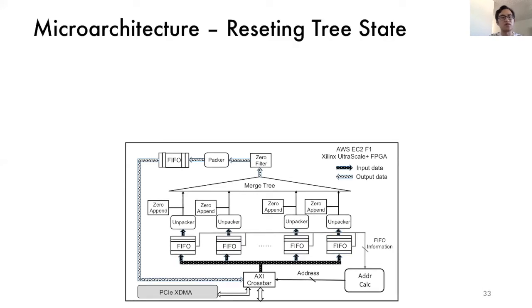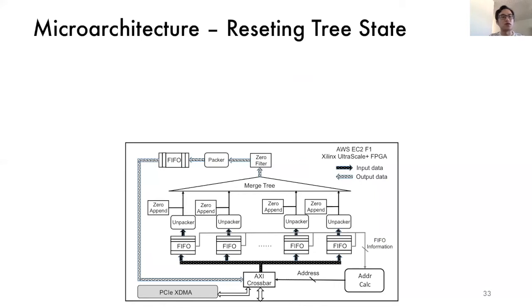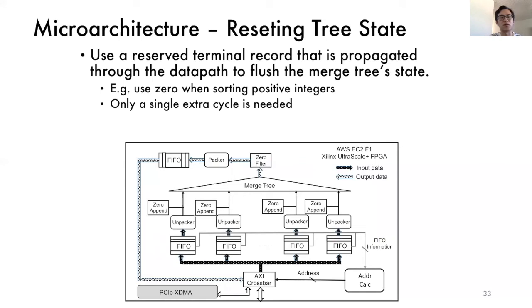The second consideration is how to efficiently reset the merge tree. In fact, the merge tree's control state needs to be reset before it can merge another chunk of new input data. This reset is repeated hundreds of thousands of times, especially at the initial stages where each merge chunk is very small. That means the reset scheme must be efficient. On the other hand, global reset to the entire tree will have a huge fanout problem. So in our design, we use the reserved terminal record that is propagated through the data path to flush the merge tree state. For example, we use zero when sorting positive integers. That's why we see this zero append and the zero filters here. In this way, we avoid the global reset and only have one extra cycle latency.